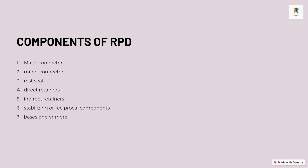The next topic is components of RPD. We'll be studying RPD and its components in upcoming videos. The components include the major connector, minor connector, rest seat, direct retainers, indirect retainers, and stabilizing/reciprocal components, which are basically clasps — there can be one or more clasps in an RPD. All these things will be explained separately in other upcoming lectures.